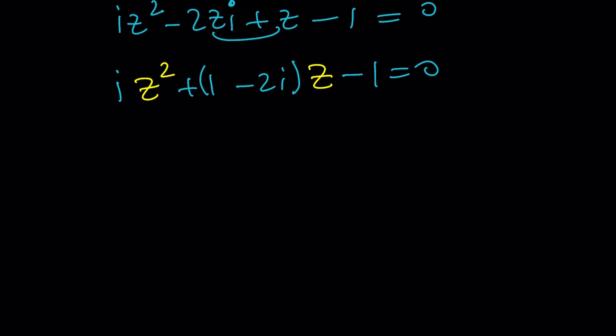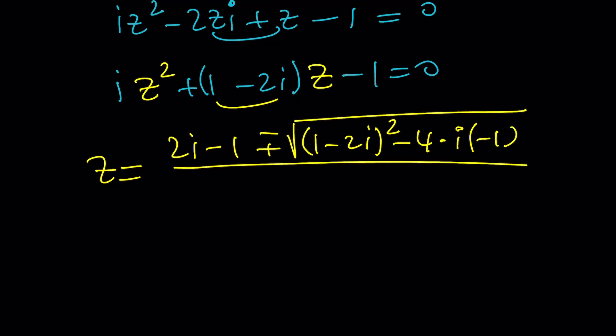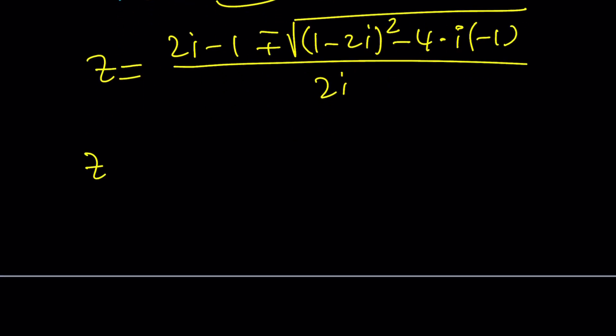So Z from the quadratic formula is going to be negative B, the opposite of this, which is 2I minus 1, plus minus the square root of B squared, which is this expression squared minus 4AC, which is 4 times I times negative 1. And then go ahead and put that all under the radical. Divide by 2I. All right. Let's simplify this.